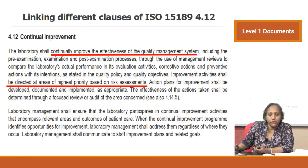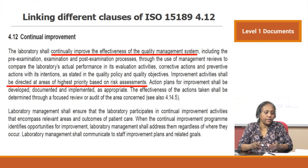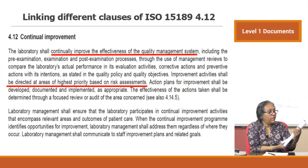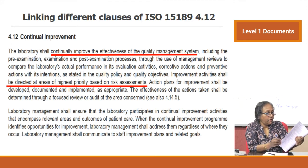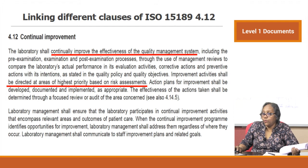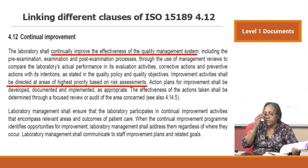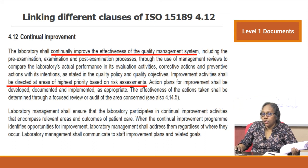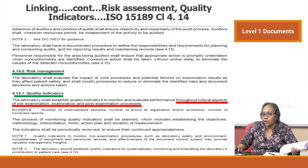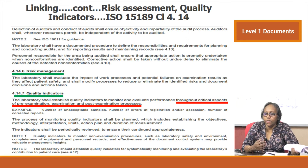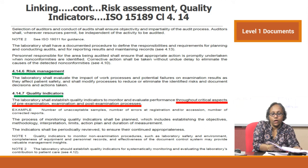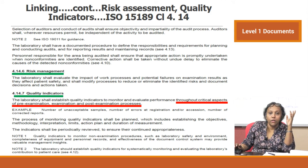Quality objectives appear in the standard at clause 4.1.2.4 — already discussed. At clause 4.12, the standard talks about continual improvement: the laboratory shall continually improve the effectiveness of the QMS, directed at areas of highest priority based on risk assessment. Clause 4.14 again discusses risk management and quality indicators. There are multiple areas of the standard addressing continual improvement, which is why the objectives and indicators in the pyramid were shown misaligned to the right.